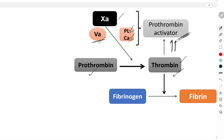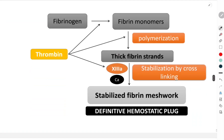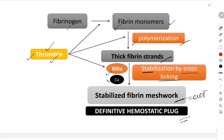Thrombin causes conversion of fibrinogen into fibrin. Fibrinogen is first converted into fibrin monomers, which undergo polymerization to form thick fibrin strands — both steps triggered by thrombin. These thick fibrin strands then undergo stabilization by cross-linking, which occurs in the presence of activated factor 13A and calcium, also activated by thrombin. This results in a stabilized fibrin meshwork.